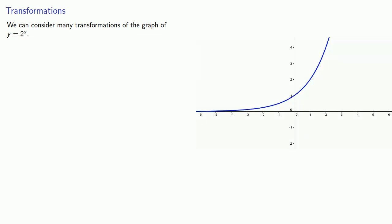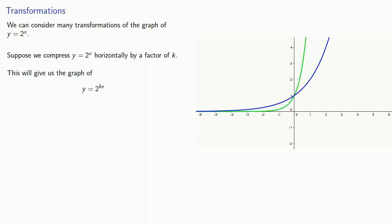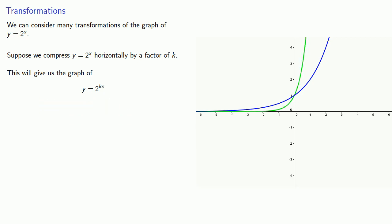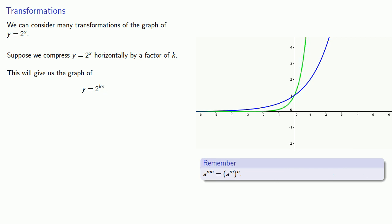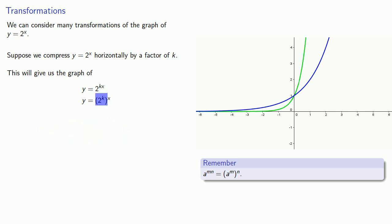Now we can consider many transformations of the graph of y equals 2 to the power x. To begin with, suppose we compress y equals 2 to the x horizontally by a factor of k. This gives us the graph of y equals 2 to the power kx. Now remember our rules of exponents — if I have something raised to a product, I can split that product. So 2 to the power kx can be rewritten as (2 to the k) to the power x. And 2 to the power k is just some real number a, so this becomes the graph of y equals a to the x.